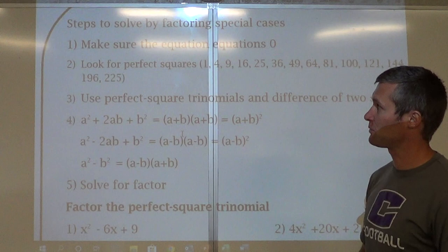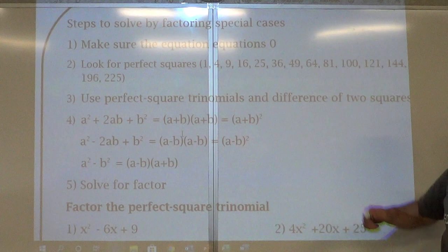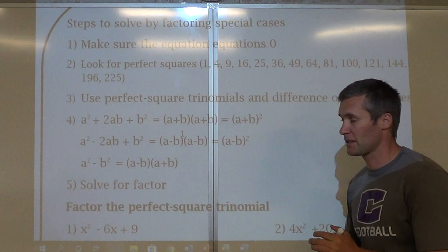Perfect squares are numbers such as 1, 4, 9, 16, 25, 36, 49, 64, 81, 100, 121, 144, 196, 225.